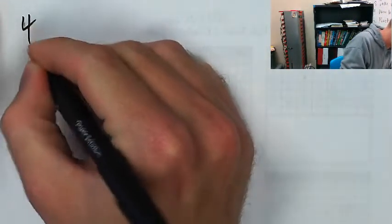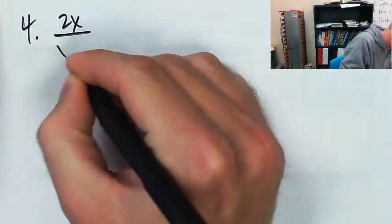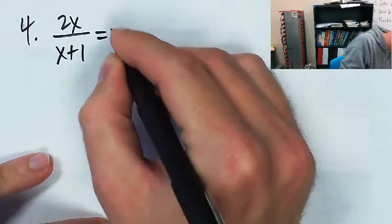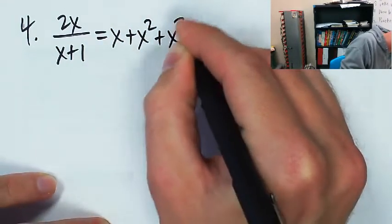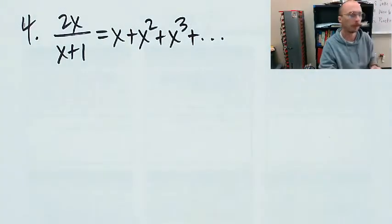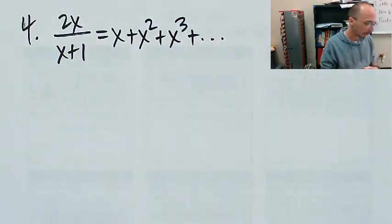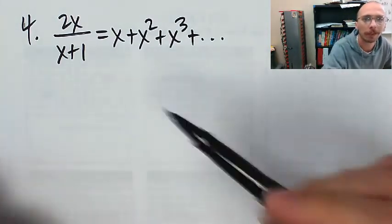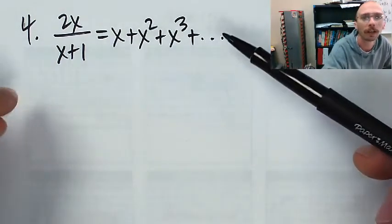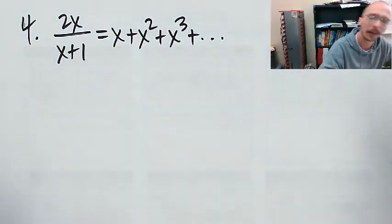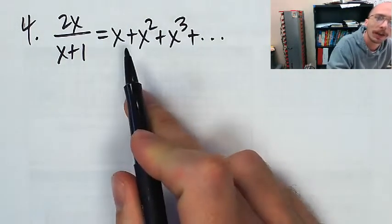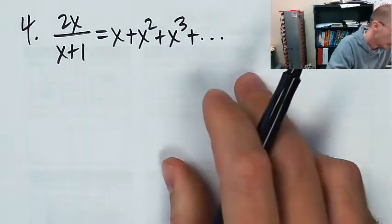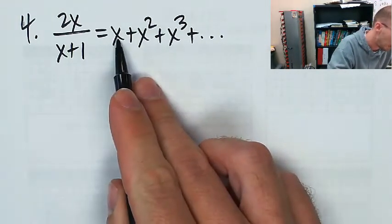Number four: find the values of X that make this equation true. I have 2x over x plus 1 equaling x plus x squared plus x cubed and so on. We don't have experience solving algebra equations that have a dot dot dot in them, so we need a finite equation. On the right I've got a geometric series.